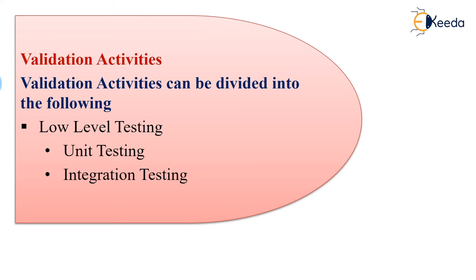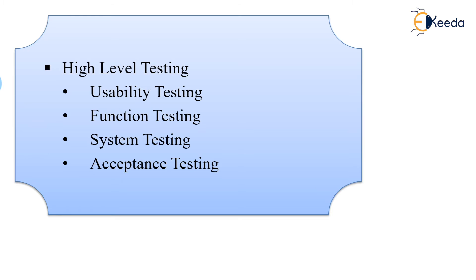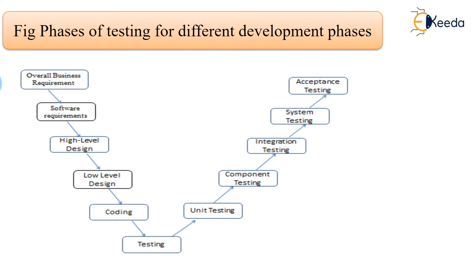Validation activities can be divided into two levels: low-level testing and high-level testing. Low-level testing includes unit testing and integration testing. High-level testing includes usability testing, functional testing, system testing, and acceptance testing.